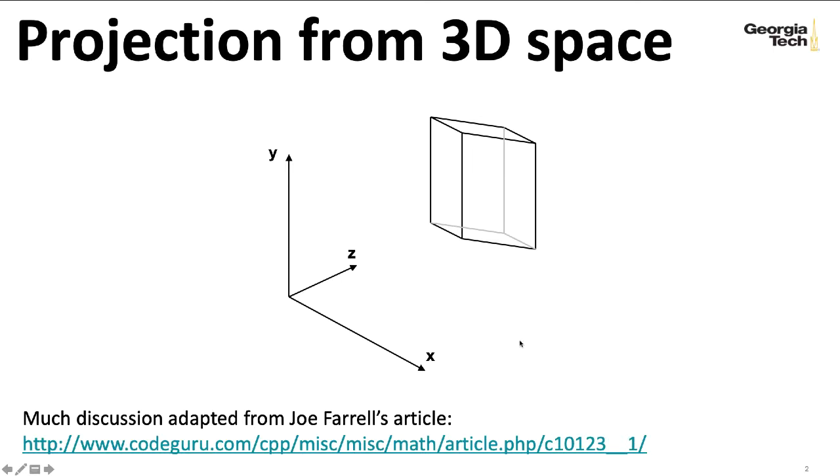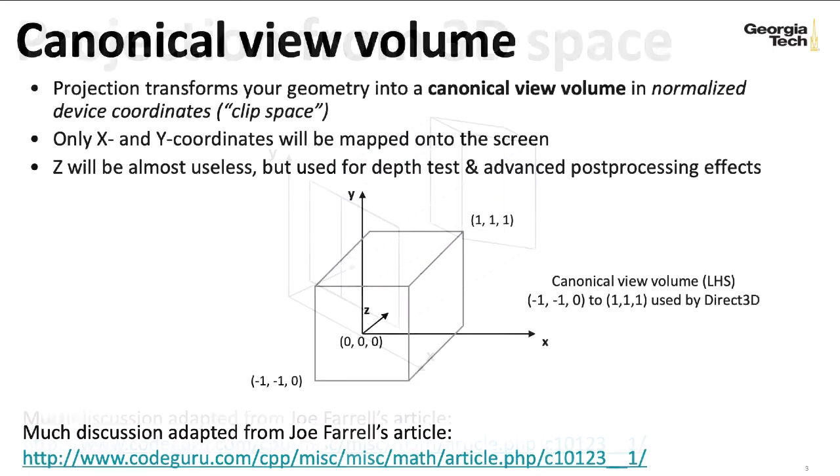Once we're in that view space, we need to take the objects in the scene and project them onto your two dimensional computer screen. Most games are going to be using either orthographic or perspective projection. In this lecture, we're going to look at orthographic projection, the simpler projection, and this will set us up to discuss perspective projection in the next lecture.